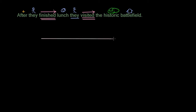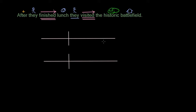Now, to diagram this, we know we have two clauses, so we're going to need two baselines and two bisecting lines. Since we have two direct objects, we're going to have two vertical lines that do not intersect or bisect the baseline. Our subordinating conjunction will tie the two verbs together and, in effect, make the second clause an adverbial clause.